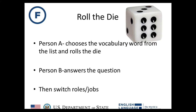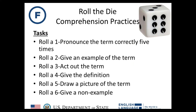The first activity is called Roll the Die. This is done in partners. Person A chooses a vocabulary word from their list and rolls the die. Person B then answers the question, and then they switch roles. If you don't have dice in your classroom, that's okay — it's a fun activity to have your students make their own. If the partner rolls number one, they have to pronounce the term correctly five times, which gives them pronunciation practice.